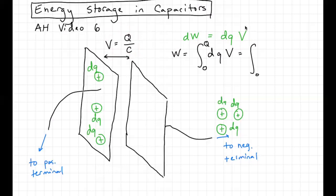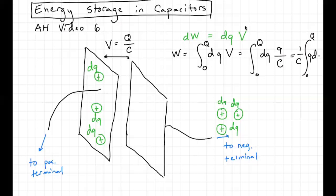At some time there's some amount of charge little q on the plates, and then I move a little bit more charge onto the plates. I do that for every value of little q between zero and big Q. This integral is straightforward — C is a constant and can be pulled out, leaving the integral from zero to Q of q dq, which gives one half q squared evaluated from zero to Q. So in total you get one half Q squared over C. That's the work done.